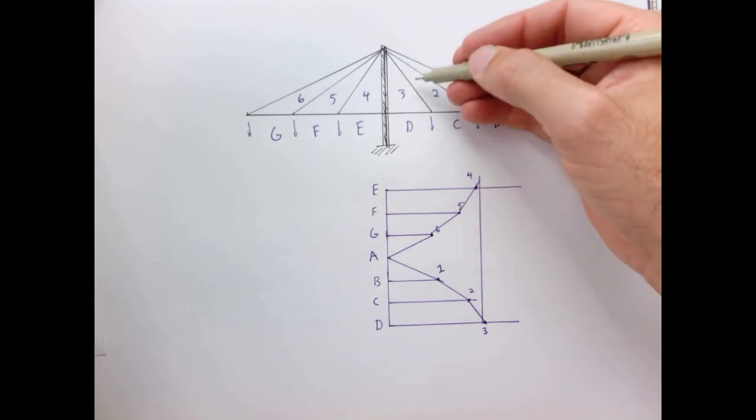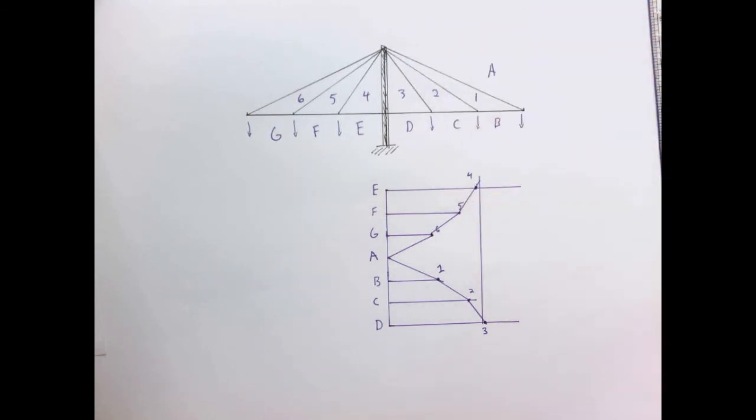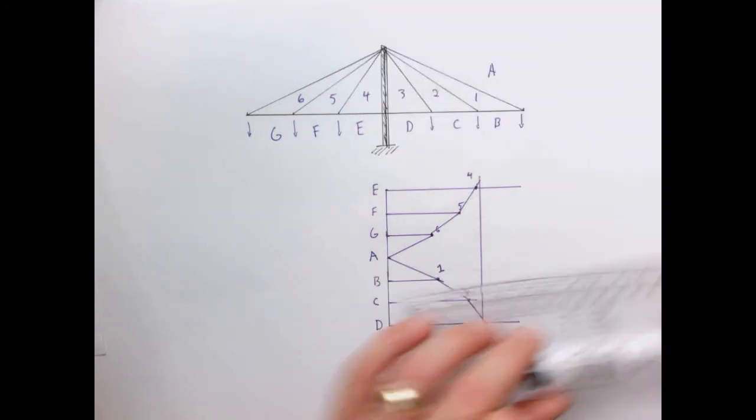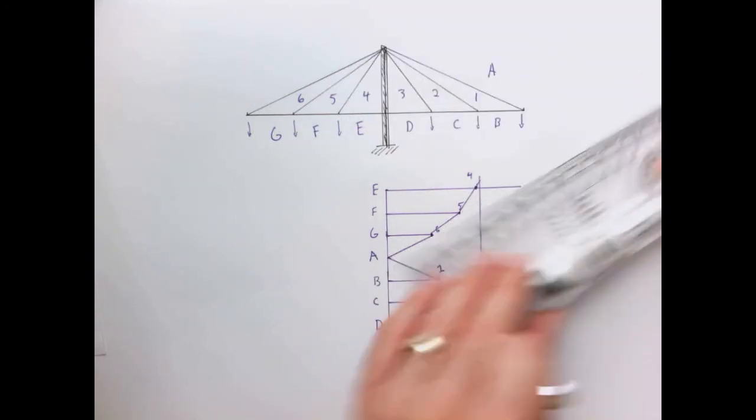So here's the form, here are the forces. And we can note a few things about the forces. So one is again, if we measure the length of any line, it gives us the force in that member. So these cables will all be in tension. So we could just measure the length of those and get the tension.